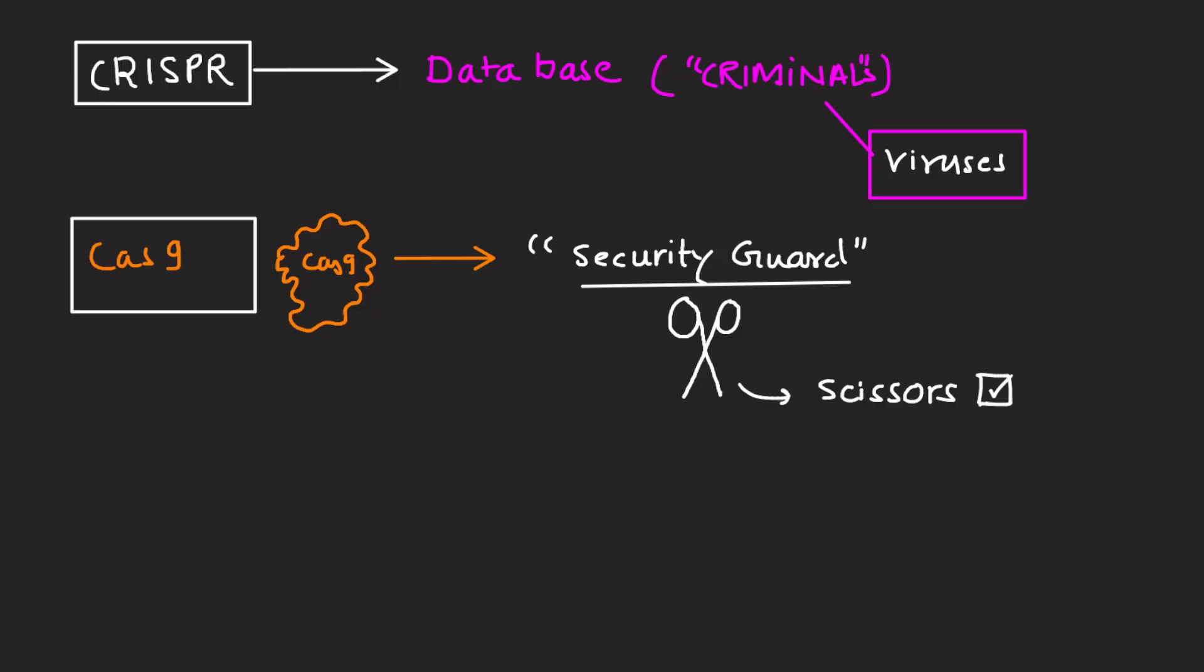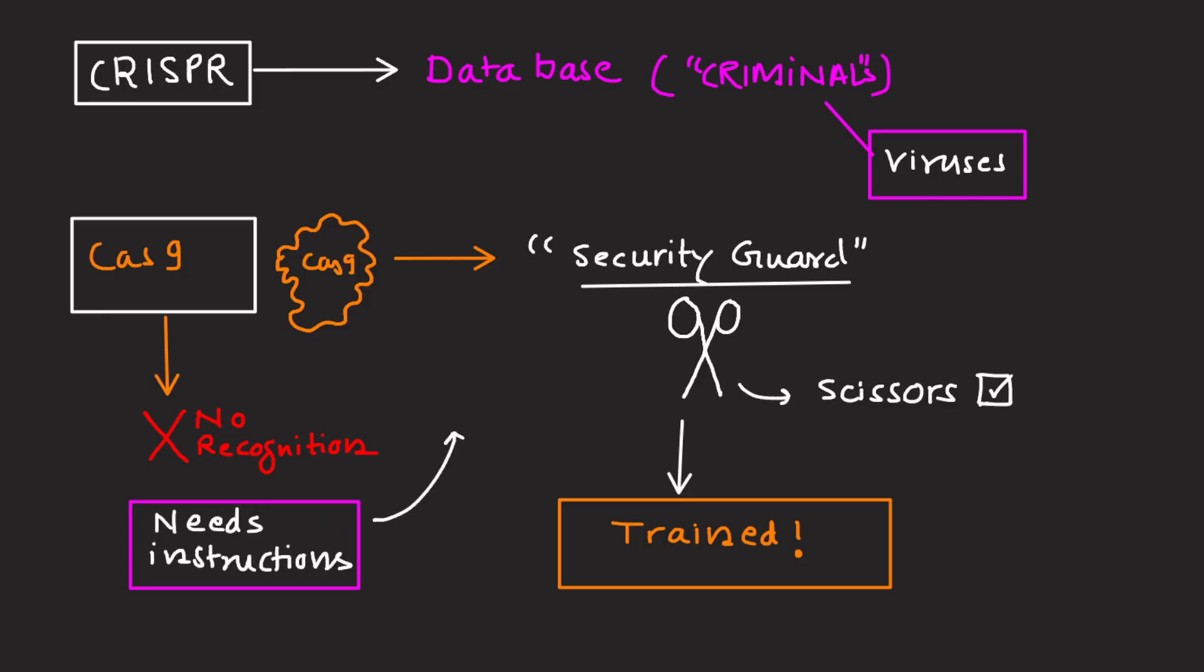But Cas9 doesn't recognize the virus on its own. It needs instructions. That's where guide RNA comes in.